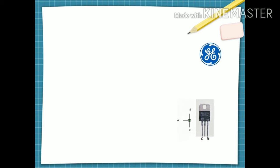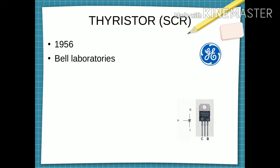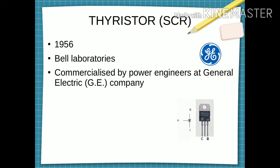Then after that, thyristor was invented. Thyristor is also called silicon controlled resistor. It was a breakthrough happened in 1956. Bell Laboratories developed thyristor and it was commercialized by power engineers at General Electric Company.